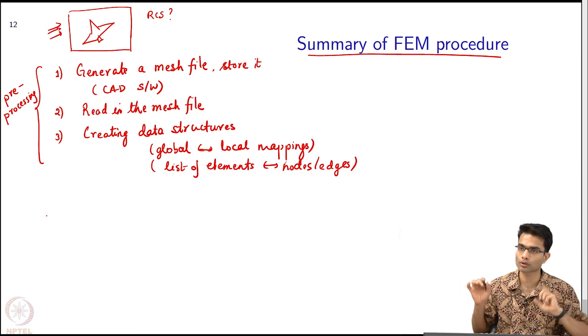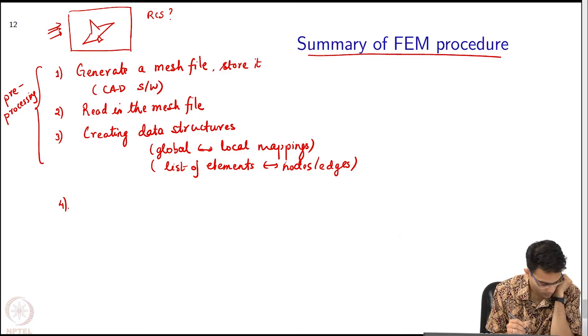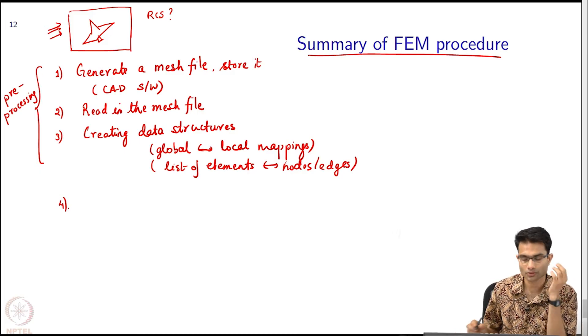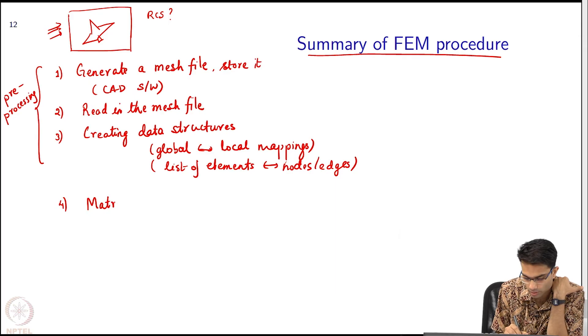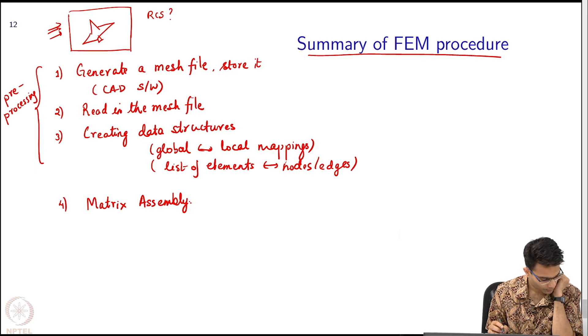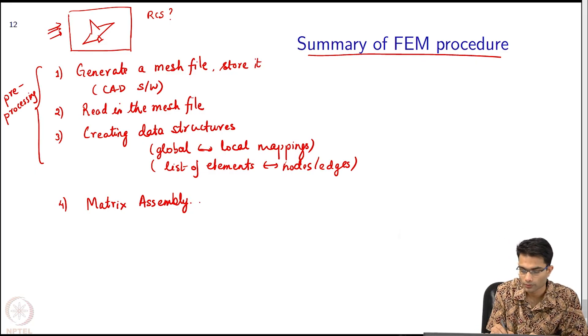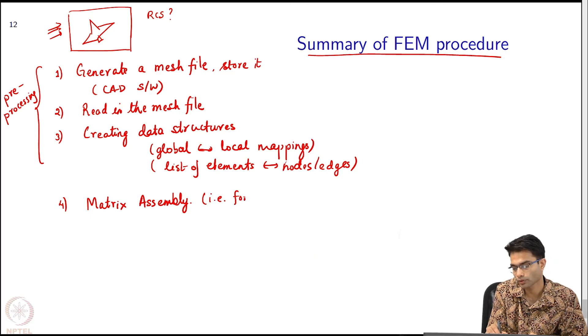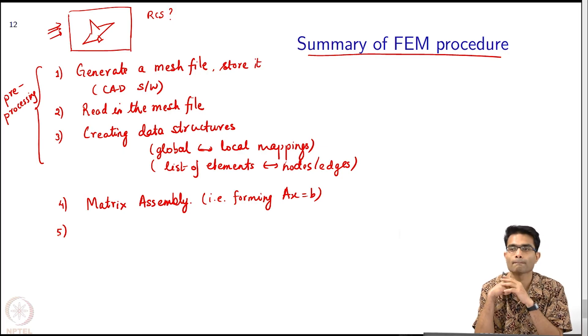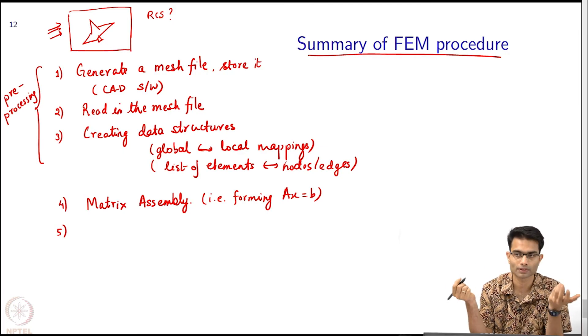Now all your data is in your program, now we can start working with it. What is the next step? What we just discussed in the previous slide: calculating the matrix elements. Matrix assembly, that is forming A x equals b. Next obvious step, once you have A x equals b, what do you do? Solve it.